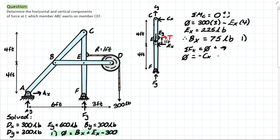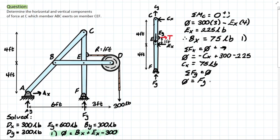Taking ΣFx in CEF: we have Cx acting negatively by convention, plus the tension of 300 pounds, minus Ex of 225 pounds. That leaves us with Cx = 75 pounds. We can also write the ΣFy equation: Fy + Cy − 600 = 0, but we may need to return to this for Fy. Since we still need Cy, we move to our last member, ABC.